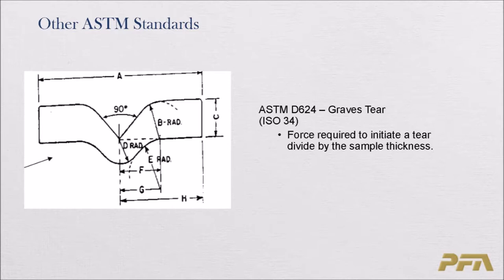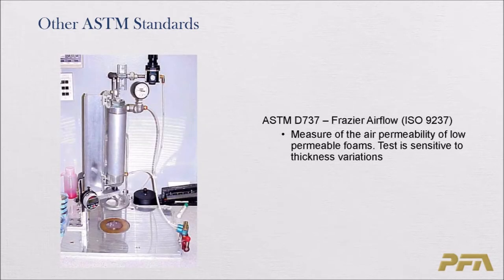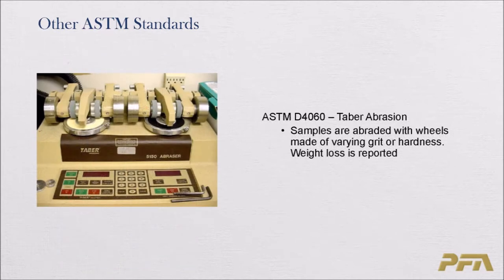ASTM D624 covers graves tear strength, also known as Die C — the die used to cut the sample — which measures the force required to initiate a tear divided by the sample thickness. Unlike the propagating tear test in D3574, this test initiates a tear. ASTM D737 is Frazier airflow, measuring air permeability of low-permeable foam; it is sensitive to thickness variations and is used for airflows outside the range of the D3574 airflow test.